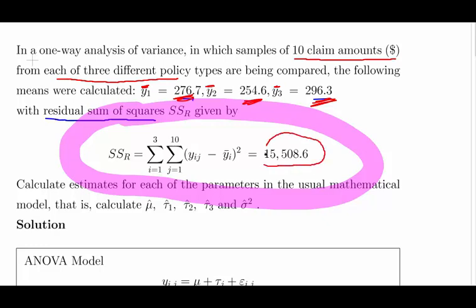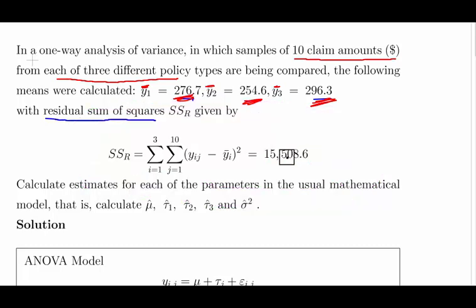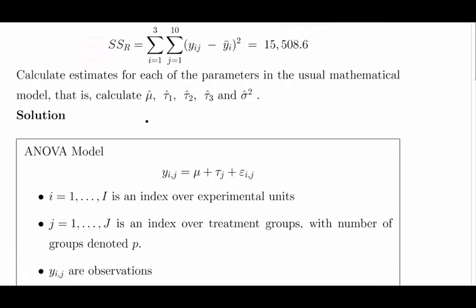If you were to do that, we would get 15,508.6. Now, the question asks us to calculate estimates for each of the parameters in the usual mathematical notation — that is, calculate mu-bar (the grand mean), tau 1, tau 2, tau 3 (the three treatment effects), and sigma squared (the residual variance). The hat notation means estimate.